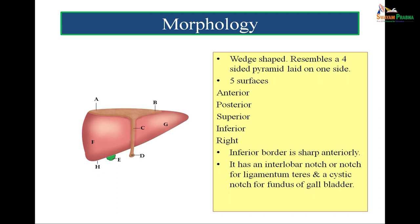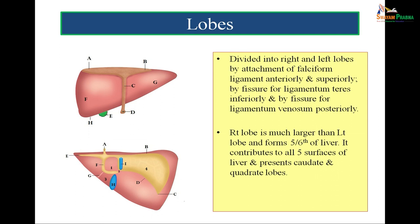In this figure we are seeing the anterior aspect of the liver. The liver has got five surfaces: anterior, posterior, superior, inferior and right. It is important to remember that the inferior border of liver is sharp anteriorly. The liver has an interlobar notch or notch for the ligamentum teres and a cystic notch for the fundus of the gallbladder. The right and left lobes of liver are separated by the falciform ligament anteriorly. E is the gallbladder and H is the inferior border of liver which is sharp anteriorly. The liver can be divided into right and left lobes by attachment of falciform ligament anteriorly and superiorly.